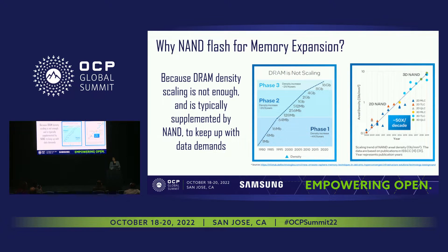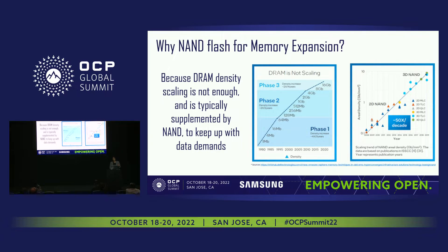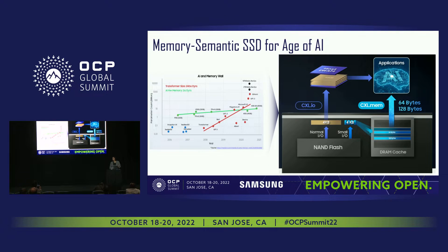But why are we looking beyond DRAM, and why are we going into NAND for CXL-based memory expansion? Typically, this is due to TCO concerns and because DRAM density is not scaling enough to meet data needs. NAND is needed to supplement and expand to keep up with demands. NAND scaling has been much better than DRAM scaling alone, and even with DRAM available, the TCO may not be good enough for purely DRAM-based expansion.